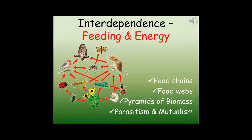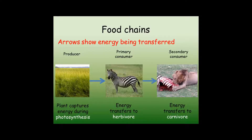Different living things get the glucose they need in different ways. Plants are autotrophic, which means they make their own glucose through photosynthesis. Animals are heterotrophic, which means they feed on other living things.